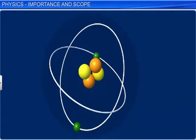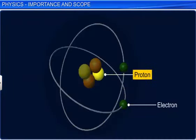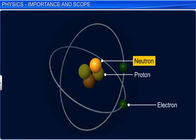An atom consists of three subatomic particles. Namely, electron, proton, and neutron. The force that binds protons and neutrons is the strong nuclear force.